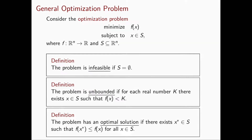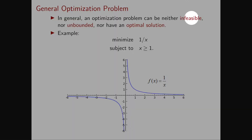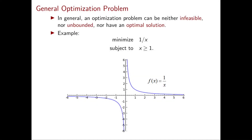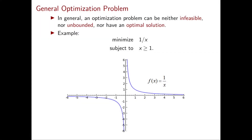In chapter 1 we saw linear programming problems of all three types. But a natural question is whether there exist other possible outcomes for an optimization problem — and indeed there are. A general optimization problem might not have any of those three outcomes: it can be neither infeasible nor unbounded nor have an optimal solution. A simple example: minimize 1/x subject to x greater than or equal to 1.